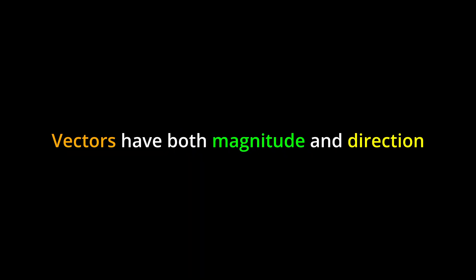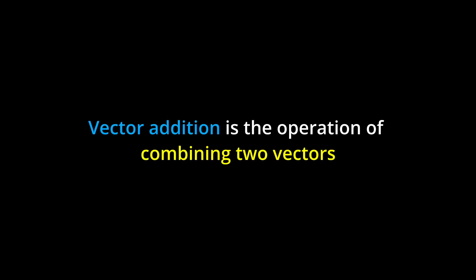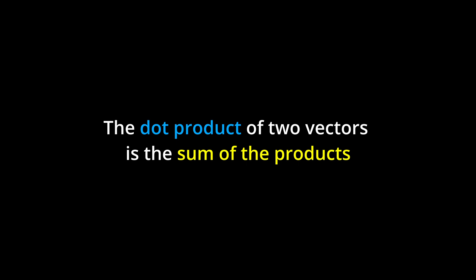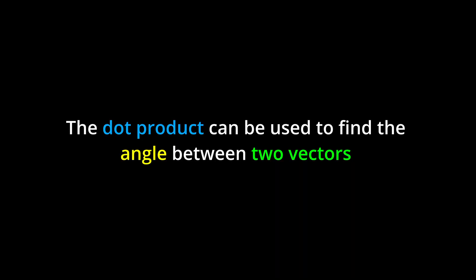Key Points. Vectors have both magnitude and direction and are represented by directed line segments. Vector addition is the operation of combining two vectors to obtain a resultant vector. Vector subtraction is the operation of finding the difference between two vectors. The dot product of two vectors is the sum of the products of their corresponding components. The dot product can be used to find the angle between two vectors and determine if they are perpendicular.